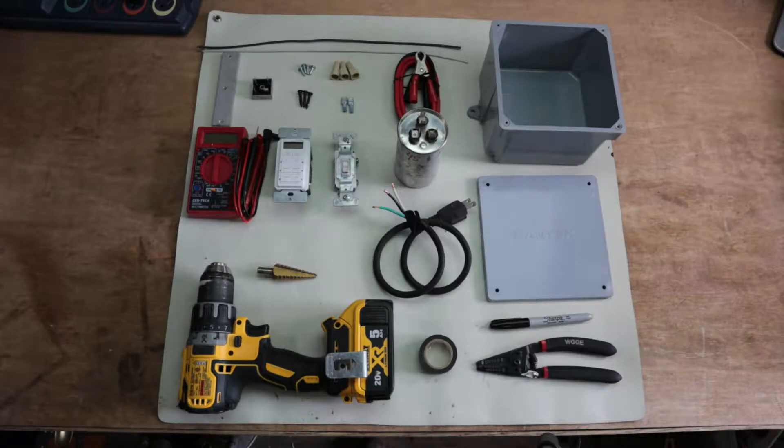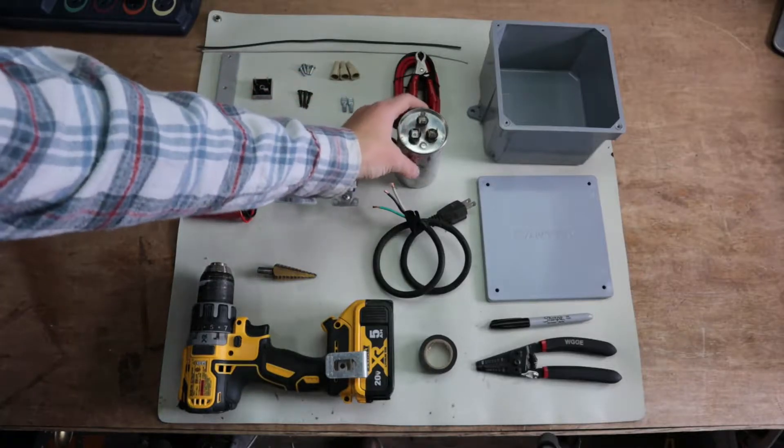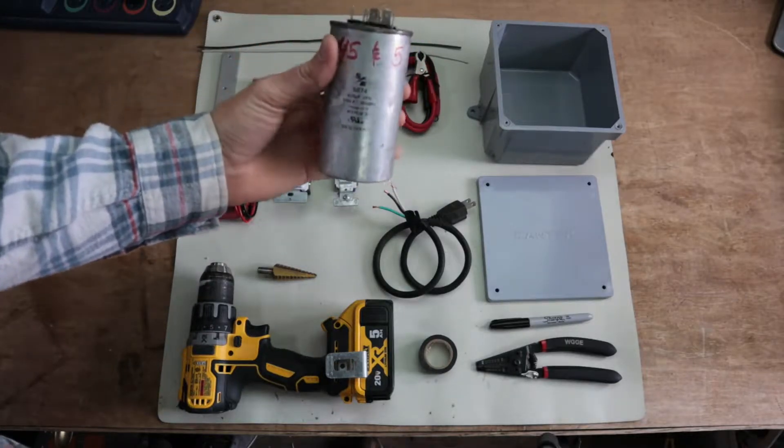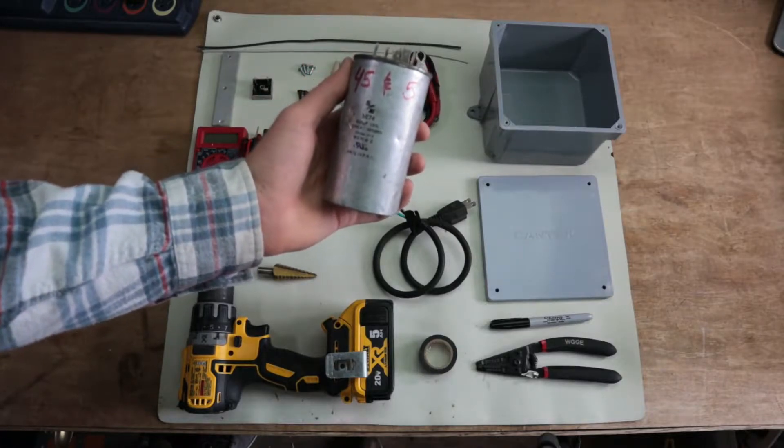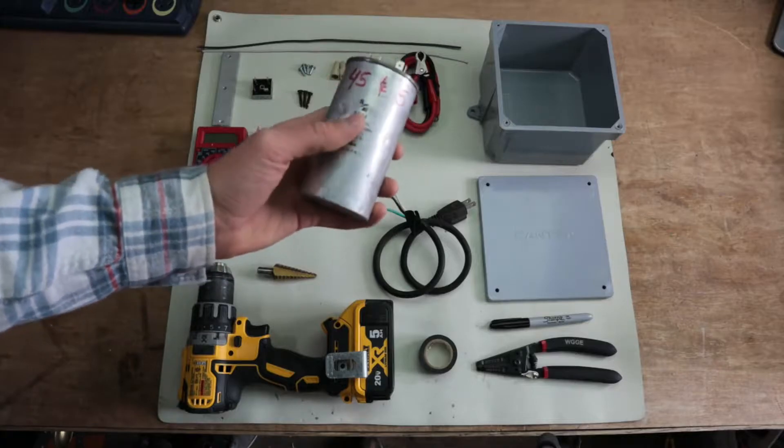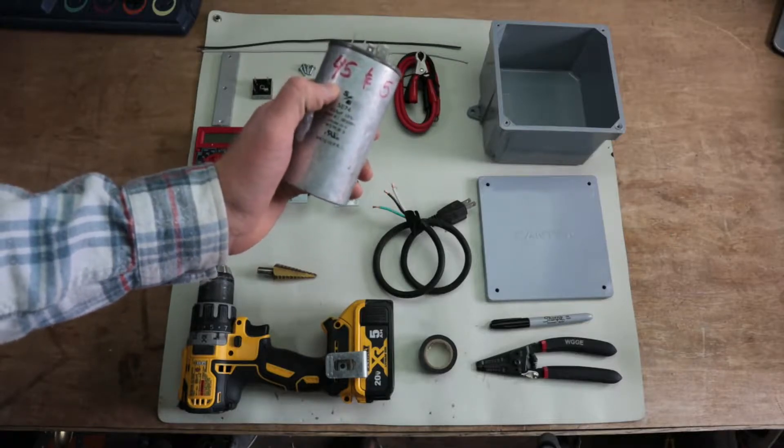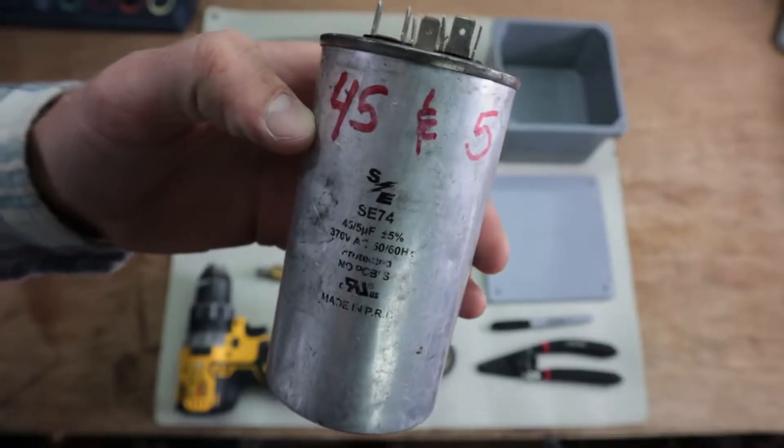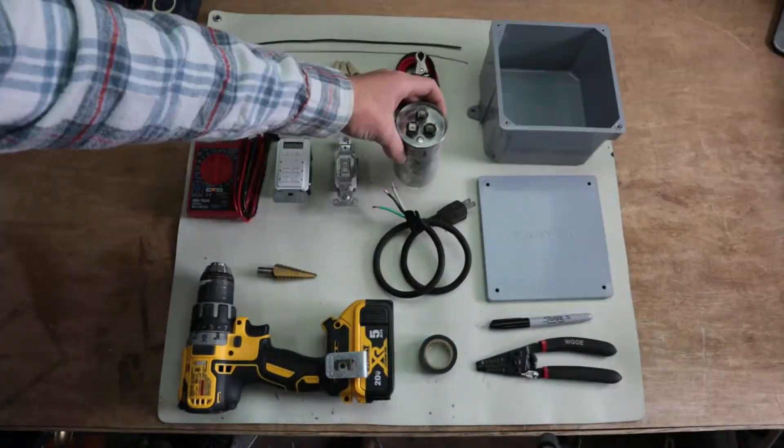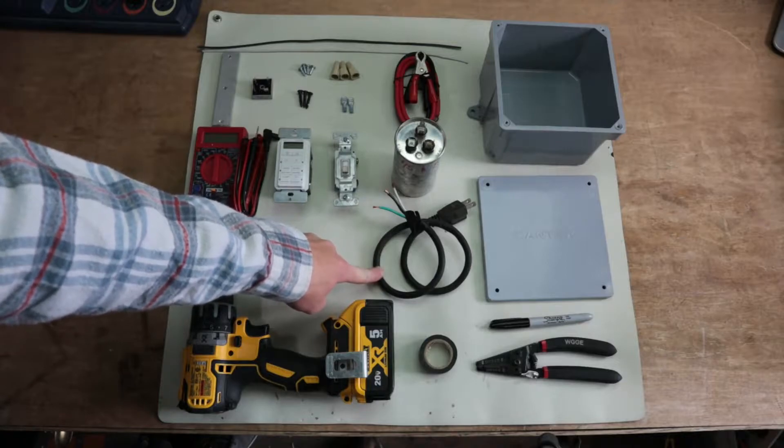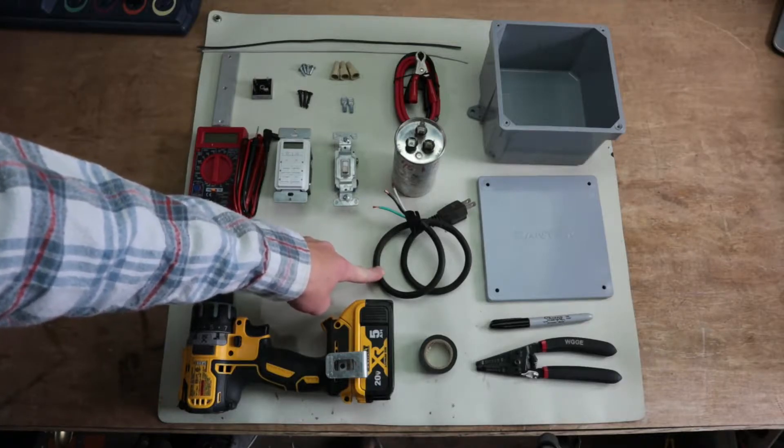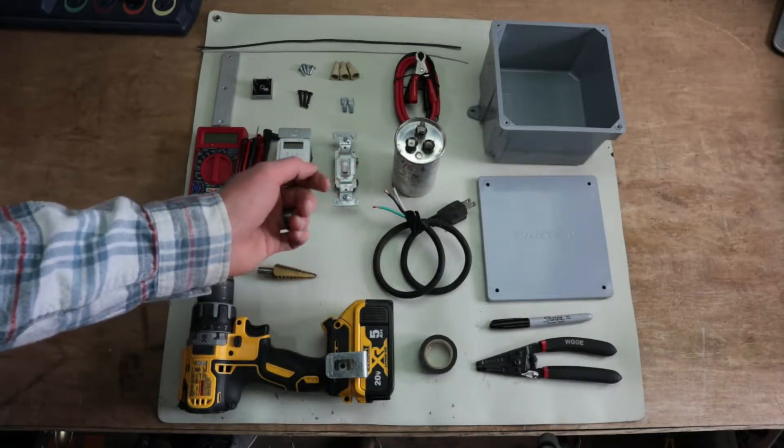Alright so this capacitive charger is based off of a capacitor. So this is what makes this charger unique, it's not going to be the standard trickle charger where we're just feeding in voltage until the battery is full. As you can see this has a 45 microfarad and a 5 microfarad capacitor in one. And the way it works is we pull current and power from a direct AC line and we use that to charge up this capacitor.